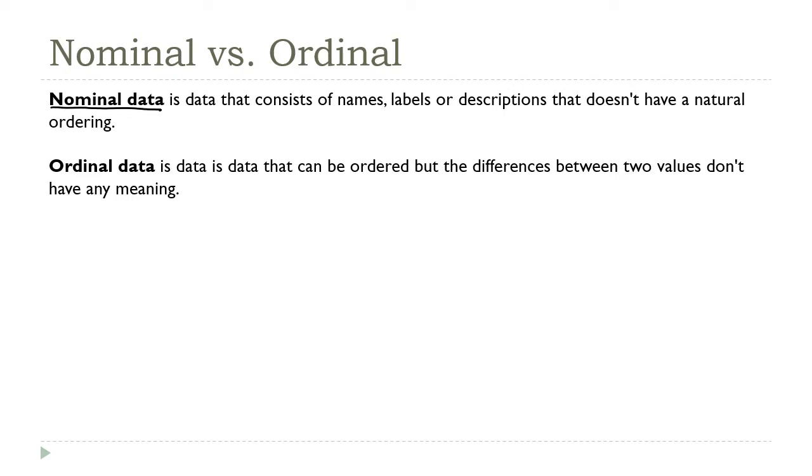The next level up is called ordinal data. This is data that can be sorted, and where the order of the results—first versus second, second versus third—tells us something about how the two values compare to each other.